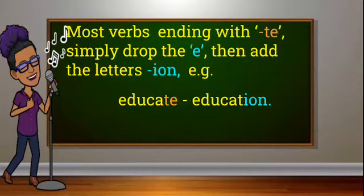Now most verbs ending with T-E simply drop the E, then add the letters I-O-N.